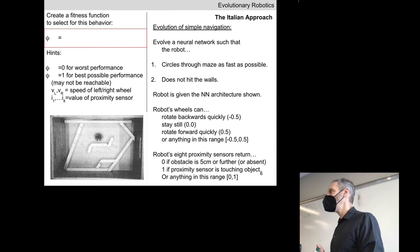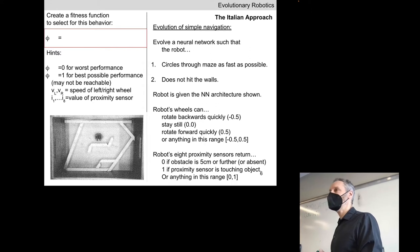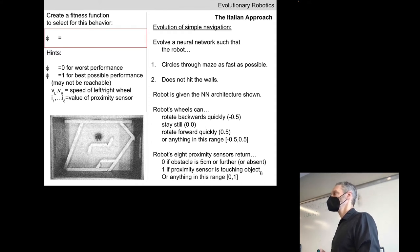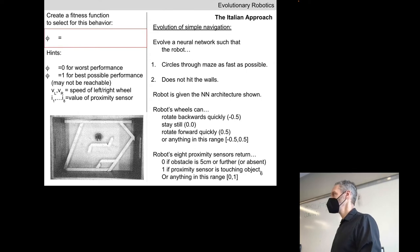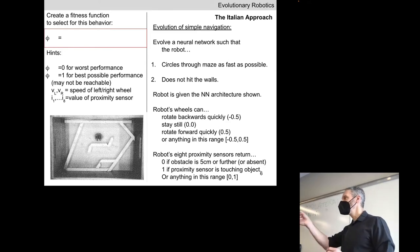We've got half the puzzle figured out, but obviously we need it to also not crash into walls. We have our velocity component; we know how to select for driving. The other component is to sum up all of the infrared sensor values. Do we take those two components and add them together or multiply them together?